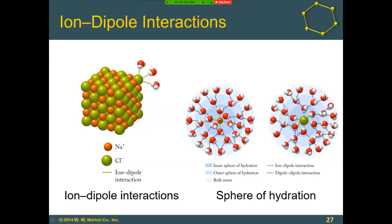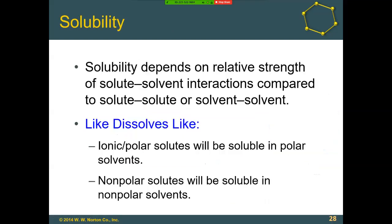Between the ion and the water we have ion-dipole interactions, shown as green dashed lines, and the blue dashed lines represent the dipole-dipole interactions between all of the neighboring water molecules.